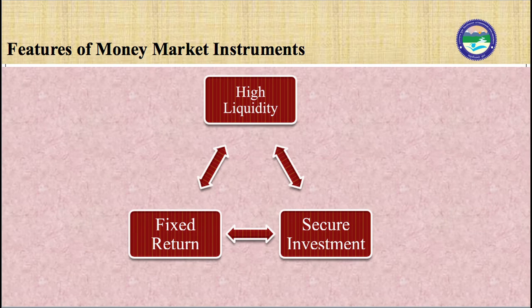The key features of money market instruments are: high liquidity — these short-term financial assets can be easily converted into cash; secure investment — most instruments are offered by the government, making them highly safe; and fixed return — since money market instruments are offered at a discount to face value, the amount the investor gets at maturity is decided in advance, helping individuals select investments suited to their needs and investment horizon.